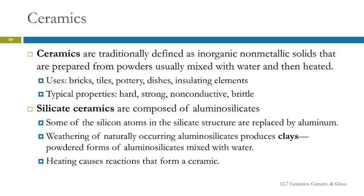There are different types of ceramics. Silicate ceramics are composed of aluminosilicates — a silicon-oxygen solid where some of the silicon atoms are replaced with aluminum. This happens naturally in the environment; if aluminosilicates weather, they produce clays. Clays are powdered forms of aluminosilicates mixed with water, found naturally or made. You take this clay and heat it, and that forms a ceramic.